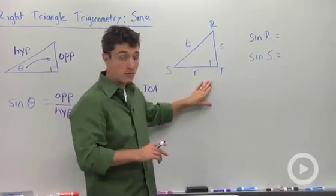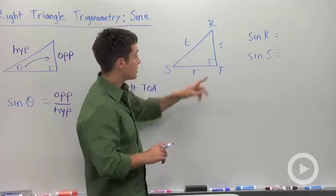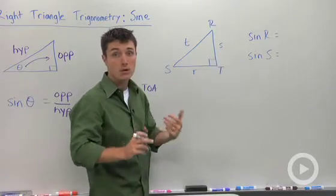Over here, I've drawn a triangle with vertices R, S, and T. And notice that the sides opposite them are the lowercase versions.